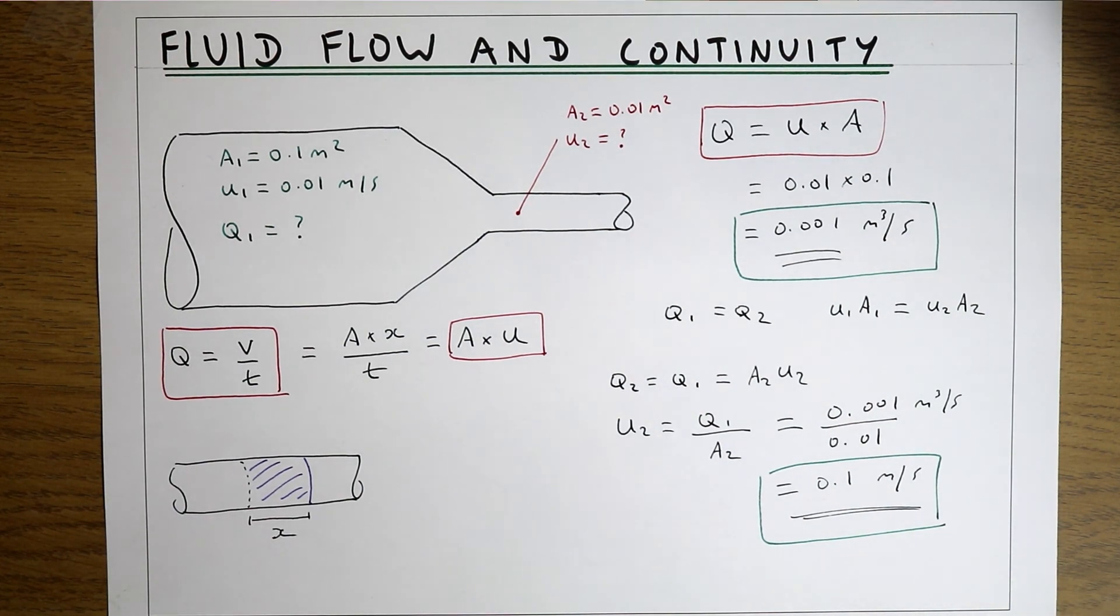This is an example of how we can use the principles of continuity to solve velocities along a pipe with changing cross-section.